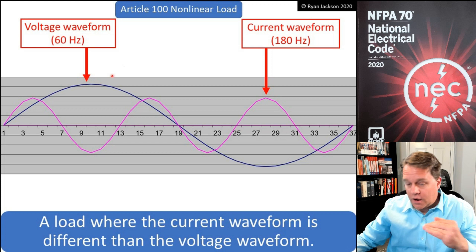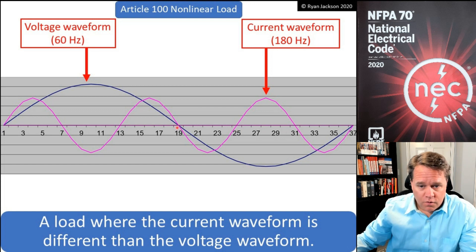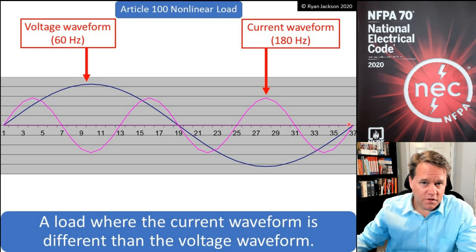Let's start with the voltage waveform, shown in blue. This is a nice, normal, predictable 60 hertz sine wave. One cycle goes from zero crossing to peak, to zero crossing, to negative peak, back to zero crossing.